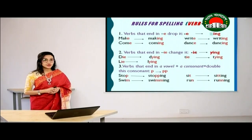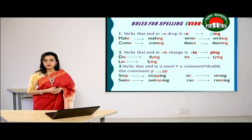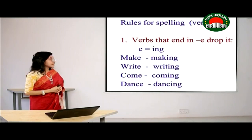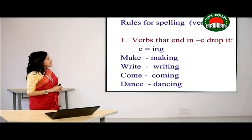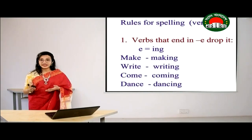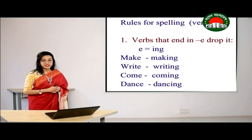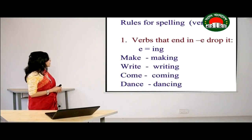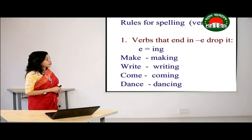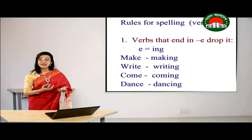Now I am going to show you some rules for adding -ing at the end of verbs. The first rule: verbs that end in 'e' — drop the 'e' and add -ing. For example: 'make' becomes 'making,' 'come' becomes 'coming,' 'write' becomes 'writing,' and 'dance' becomes 'dancing.' All these words end in 'e,' so when adding -ing, we delete the 'e' and add -ing in its place.